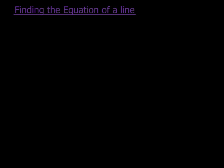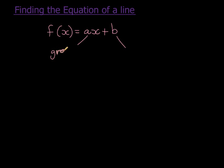Welcome to this lesson on finding the equation of a line. We are given information about a line and must find the function formula. For a straight line, the function formula is f(x) = ax + b, where a is the gradient — the direction — and b is the y-intercept, the position.